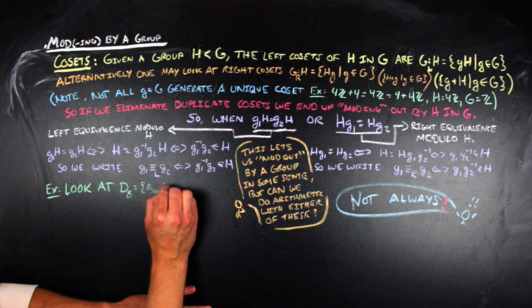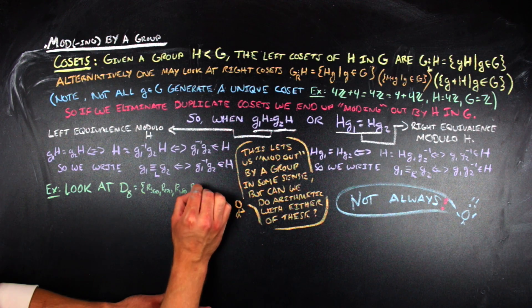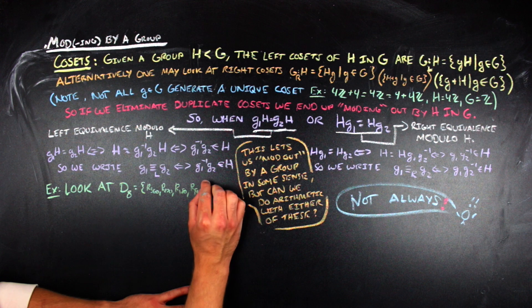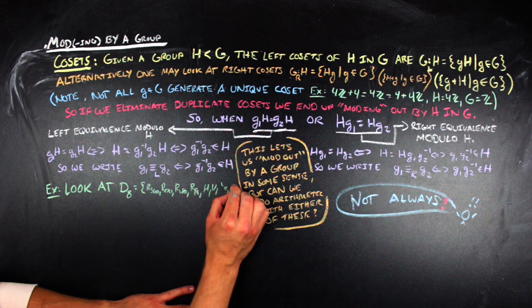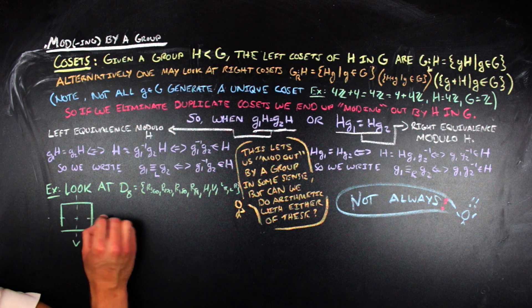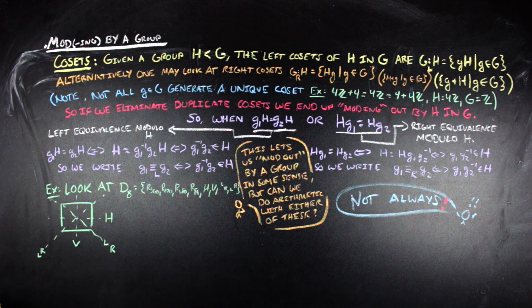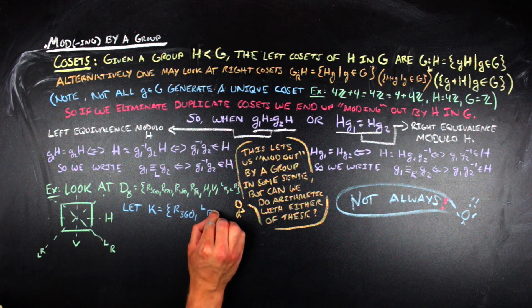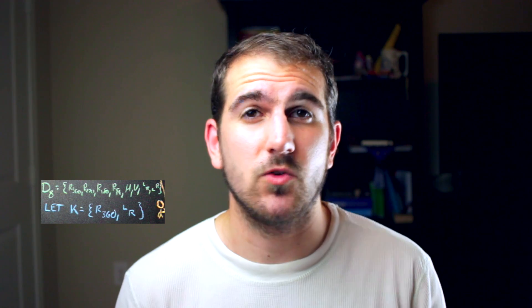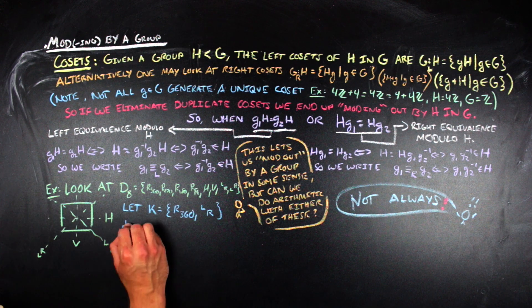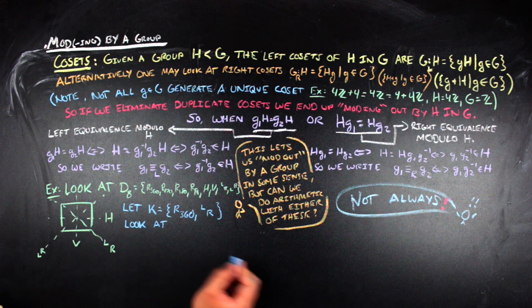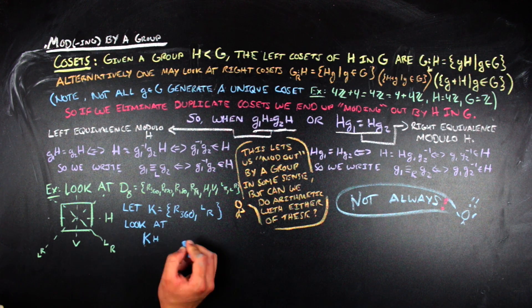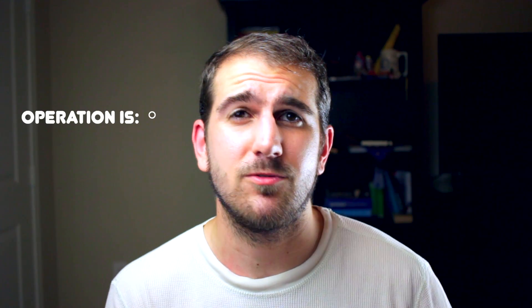To see why, look at a small group where things break down: the symmetries of the square, a group of order 8 containing rotations by 90°, 180°, 270°, and 360° (the identity) — all counterclockwise — along with a horizontal flip, a vertical flip, a bottom-left-to-top-right corner flip, and a top-left-to-bottom-right corner flip. If we define a subgroup K equal to the identity and the top-left-to-bottom-right corner flip, and take left and right cosets generated by the horizontal flip, arithmetic after modding out by K is not going to make much sense.